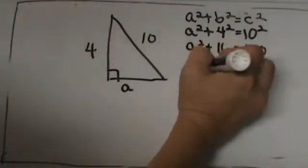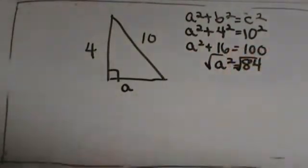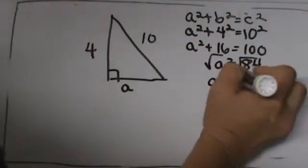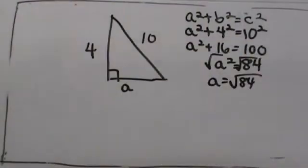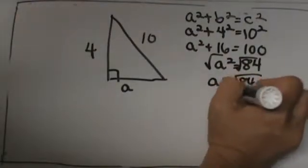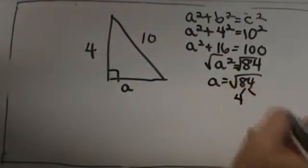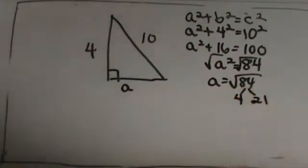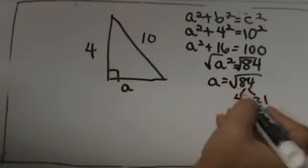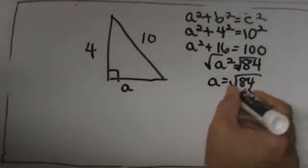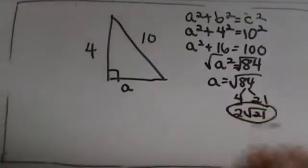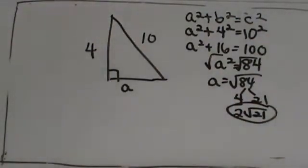Now we are going to take the square root of both sides. So we have A is equal to the square root of 84. Now at the end of this unit we are going to work on simplifying radicals, but let's go ahead and do this one. This one is 4 times 21. Well, 4 is a perfect square, so the square root of 4 is 2, so I am going to pull that outside of the radical, and that is 2 root 21. So there is your answer in radical form.